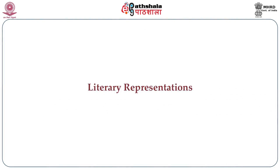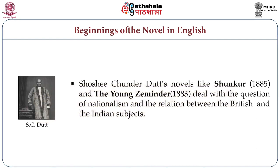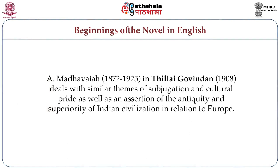Now we shall look into the literary representations, that is, the beginnings of the novel in English. Although the 1930s is commonly viewed as the decade of emergence of the Indian novel, we can trace the genealogy into the previous century. Shoshichandra Dutt's novels Shankar, published in 1885, and The Young Zamindar, published in 1883, deal with the question of nationalism and the relation between the British and the Indian subjects. A. Madhavaiah, who lived from 1872 to 1925, in Thillai Govindam, published in 1908, deals with similar themes of subjugation and cultural pride, as well as an assertion of the antiquity and superiority of Indian civilization in relation to Europe.